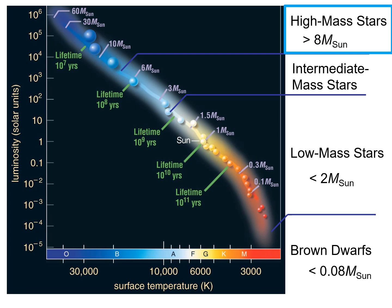As you think about the main sequence on the Hertzsprung-Russell diagram, there are brown dwarf stars, then low-mass stars with less than two solar masses. We have intermediate-mass stars between two and eight solar masses, and then high-mass stars — everything beyond that. This video focuses on stars from eight solar masses on, with a quick tie-in to intermediate-mass stars at the end.